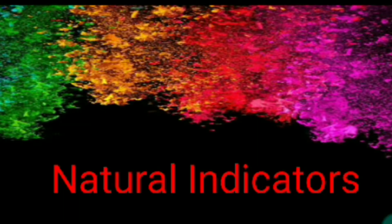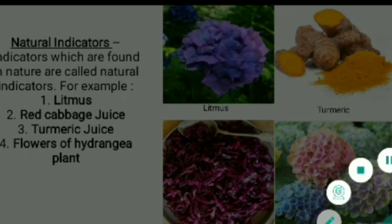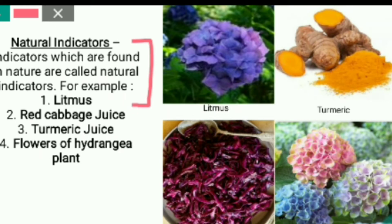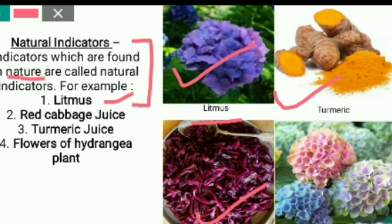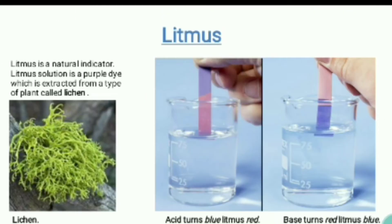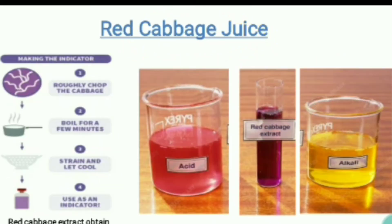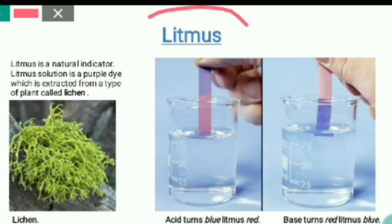First, the natural indicators. These are indicators which are found in nature. For example, litmus — litmus is obtained from a flower. The next is red cabbage juice. We will also be dealing with turmeric and the hydrangea plant. These all are natural indicators because they are all obtained from nature. Next, one by one we will be dealing with each of them.